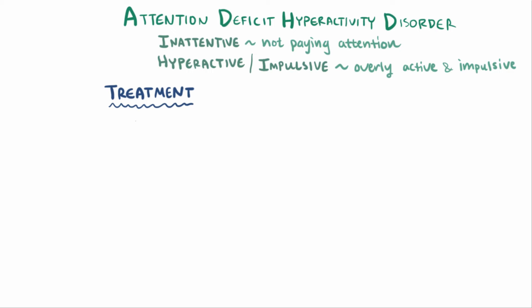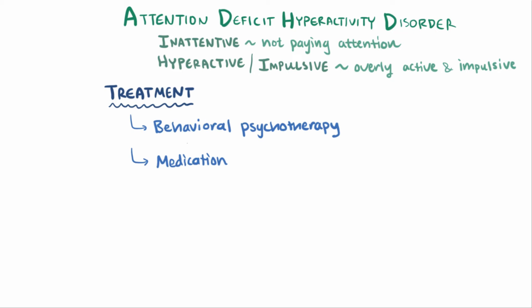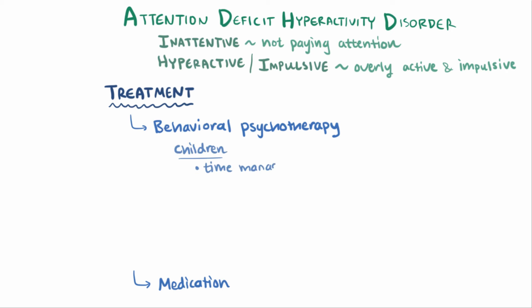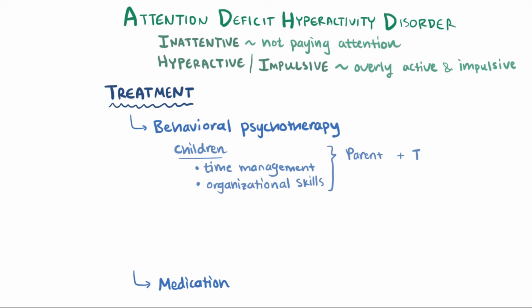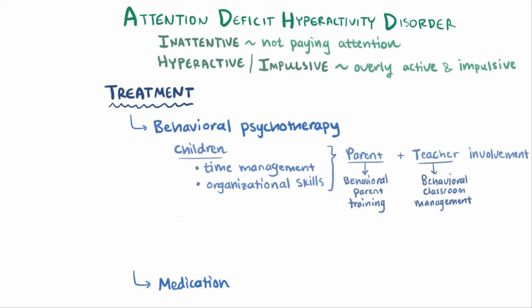Treatment for ADHD can be tricky, since symptoms may vary from patient to patient, although it most often involves either behavioral psychotherapy, medication, or both. Behavioral psychotherapy is often targeted at children and focuses on teaching better time management and organizational skills — for example, having structured routines they can follow and giving rewards when they stick to them. Involving both parents and teachers is important, and both behavioral parent training and behavioral classroom management have been shown to be helpful. For adults, behavioral psychotherapy might focus on ways of decreasing distractions and also improving organizational skills.